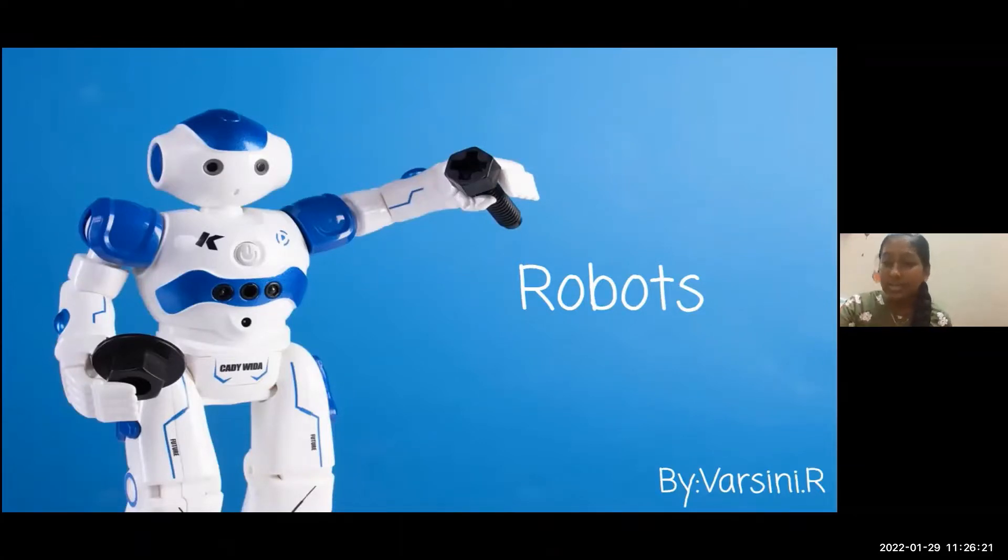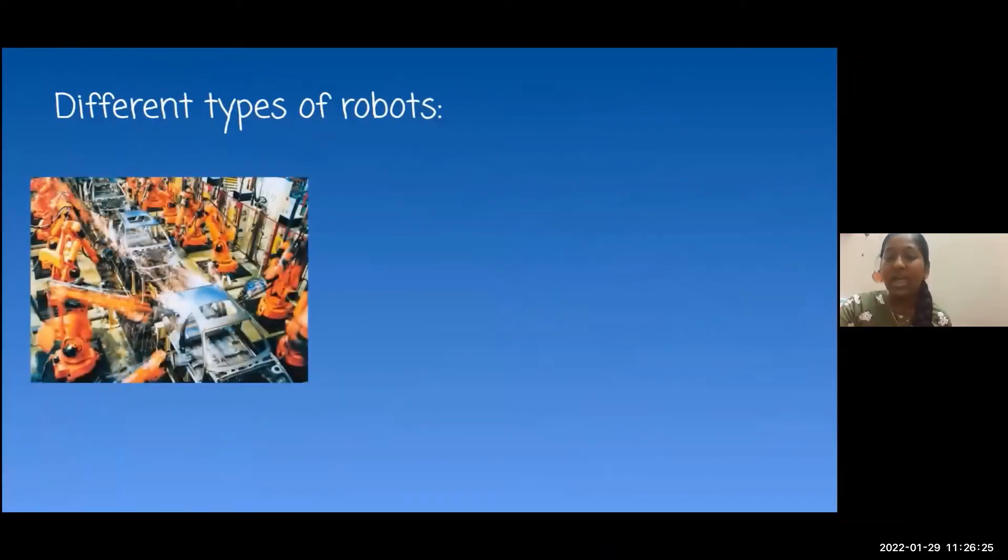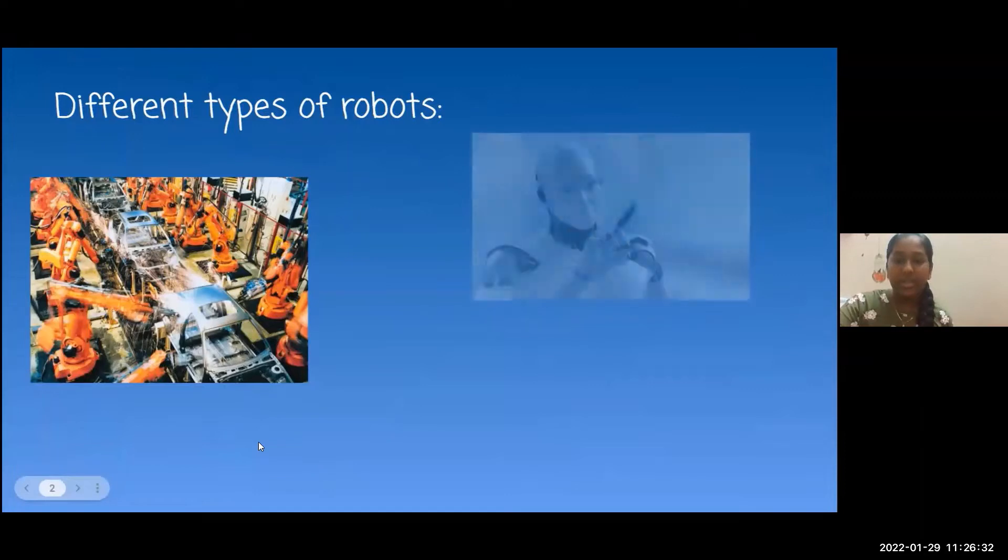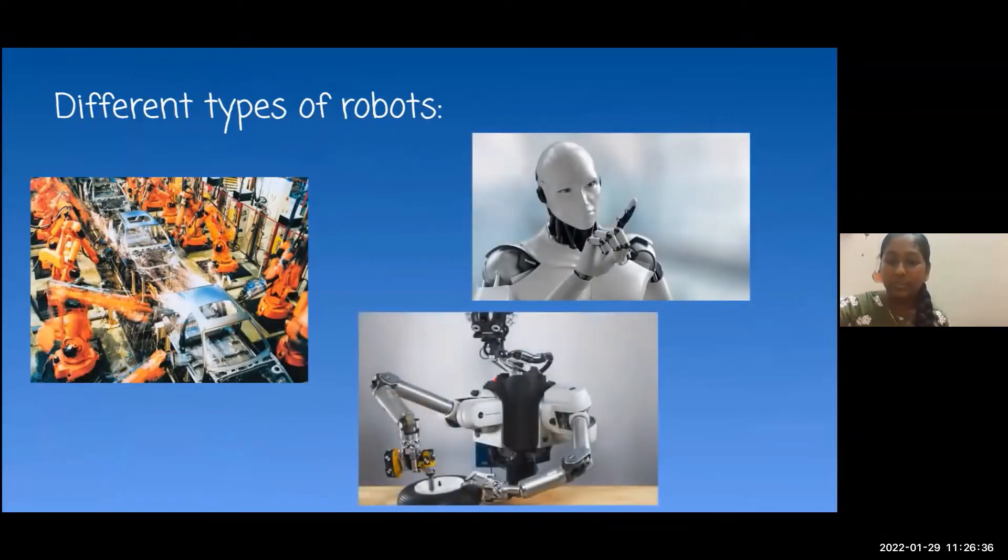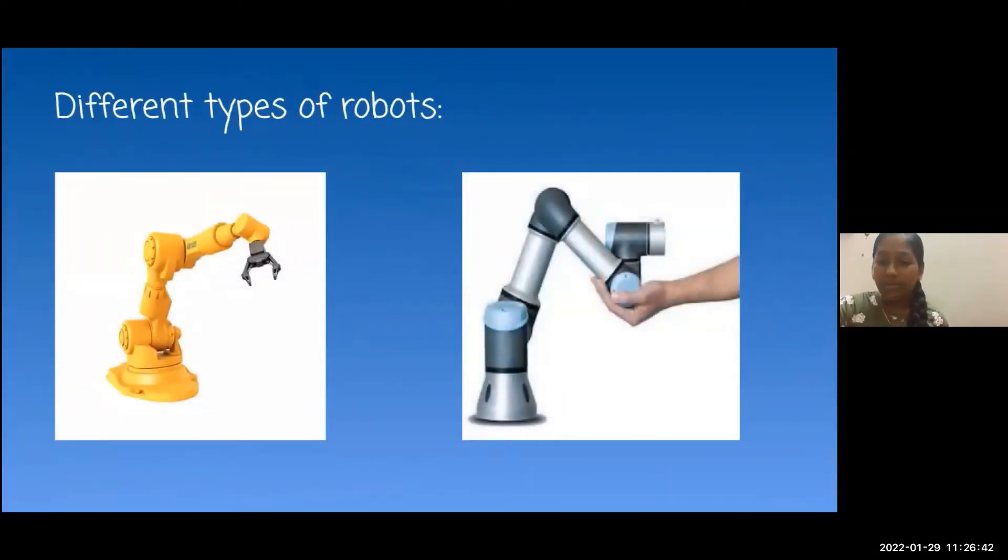There are different types of robots based on its components and its usage. The first one is pre-programmed robot, humanoid robot, autonomous robot, articulator, cobot, or collaborator robot.